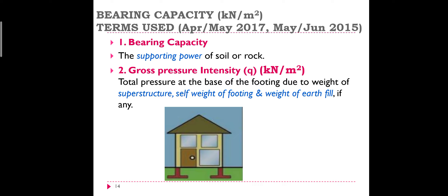The total pressure acting on the base of the footing due to the weight of the superstructure, self-weight of the footing, and the weight of the earth fill or overburden pressure — this total is gross pressure intensity. Just like gross salary is the total salary, and net salary is what remains after subtracting PF and other allowances.